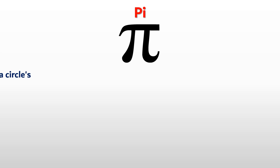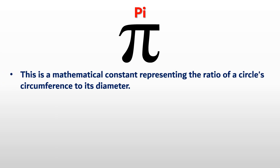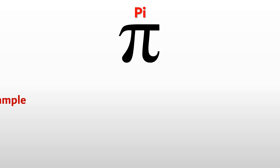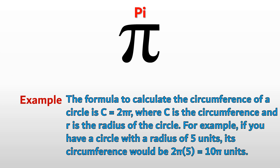Next, Pi. This is a mathematical constant representing the ratio of a circle's circumference to its diameter. For example, the formula to calculate the circumference of a circle is C equals 2 pi r, where C is the circumference and r is the radius. If you have a circle with a radius of 5 units, its circumference would be 2 pi into 5, which equals 10 pi units.